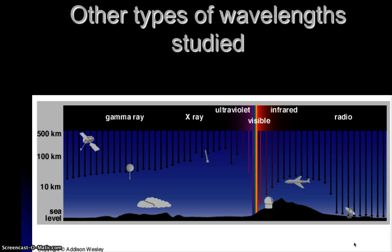Astronomers study all of these wavelengths. Not all electromagnetic waves are able to reach the ground, so in some cases we have to put instruments up into orbit to view them. Others, like radio waves, we can view from the ground. Radio astronomy is the next important thing to talk about, because it is a ground-based astronomy — you can detect radio waves at the surface of the Earth.